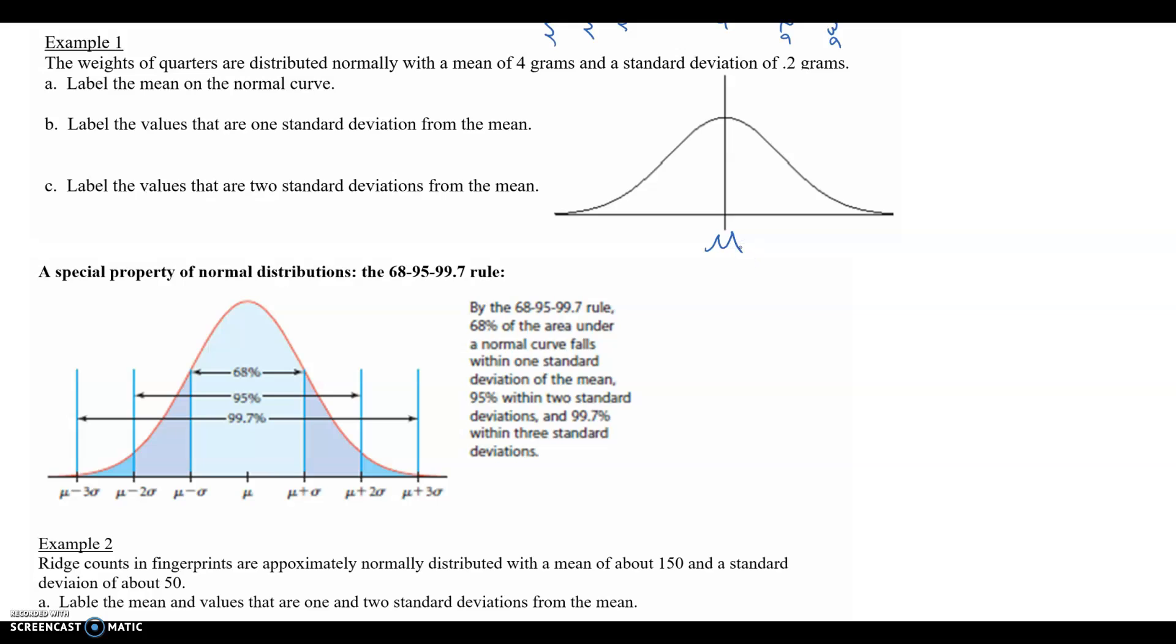So mean, remember, smack dab in the middle. Part b: label the values that are one standard deviation from the mean. So we know that the standard deviation is 0.2 and the mean is four. So this is four. One standard deviation from the mean is going to be here at 4.2, and then another standard deviation to the left of the mean, one standard deviation is four minus 0.2, so 3.8.